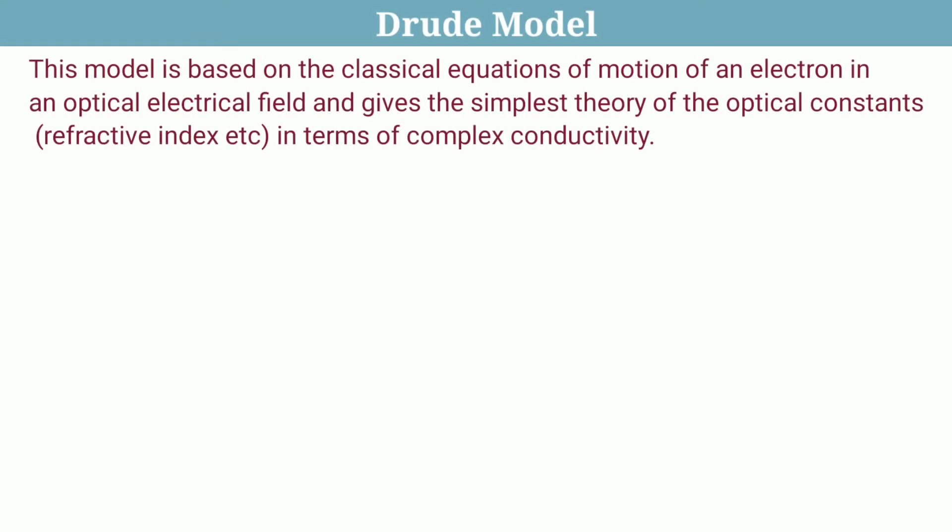This model is based on the classical equation of motion of an electron in an optical electric field and gives the simplest theory of optical constants, that is refractive index, in terms of complex conductivity.